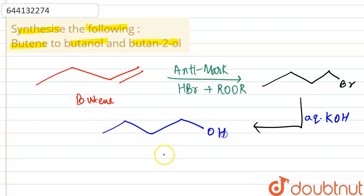This is what we have synthesized. If we can see: one, two, three, four - butane, and at position one we have OH. So it's simply butanol or we can say butane-1-ol.